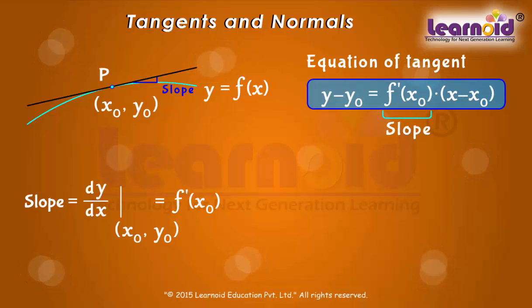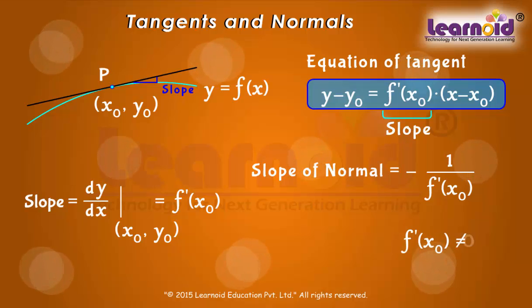Since the normal line is perpendicular to the tangent line, the slope of normal to the curve y = f(x) at (x₀, y₀) is -1/f'(x₀) where f'(x₀) ≠ 0.